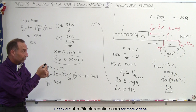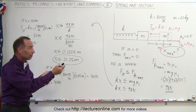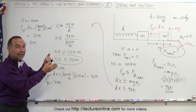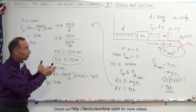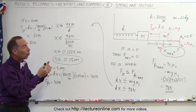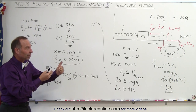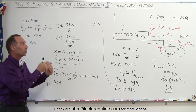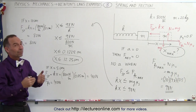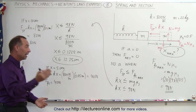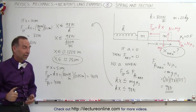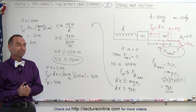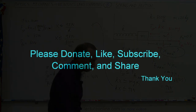The friction force is simply a reactionary force — it can only equal the force applied to it. If the applied force exceeds the maximum the friction force can be, the friction force loses and the block will accelerate. And that's how it's done.